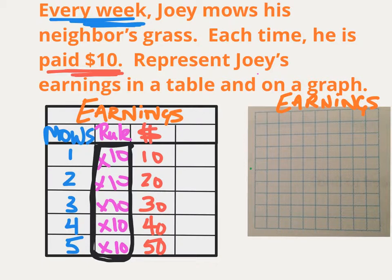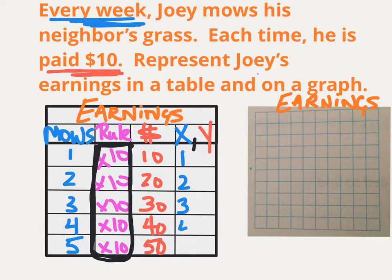We'll talk more later about how rules will be written as equations. Now, one additional column has been added to your table. You know about input, output, and rules — but this last column takes your input-output data and writes it as ordered pairs. We're going to want to graph the data in the table, so I'm going to write the data I already have as X, Y ordered pairs: I put my X data, a comma, and my Y data. Notice these are not new numbers — they're coming right out of the input-output columns.